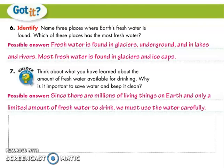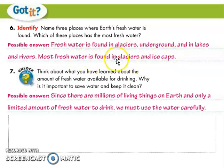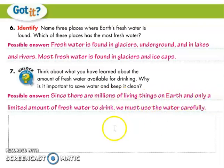Let's answer number 6: Name three places where Earth's fresh water is found. Which of these places has the most fresh water? Fresh water is found in glaciers, underground, in lakes, and in rivers. Most fresh water is found in glaciers and ice. In the Arctic region, they melt the water by boiling. Number 7: Why is it important to be careful with the amount of fresh water available for drinking? Since there are millions of living things on Earth and only a limited amount of fresh water, we must conserve it. For example, when brushing teeth, use a glass. When watering plants, use a bucket.